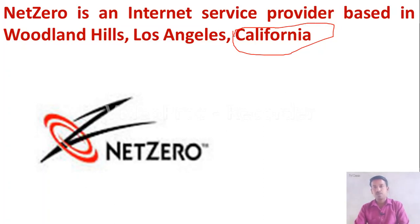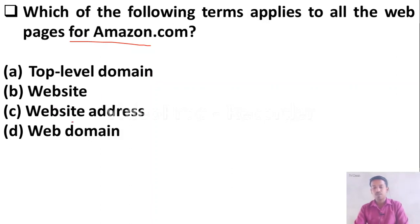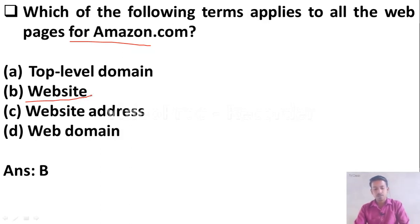Which of the following terms applies to all the web pages of Amazon.com? Option A: top level domain, Option B: website, Option C: website address, Option D: web domain. The right answer is Option B, website — it applies to all the web pages of Amazon.com.